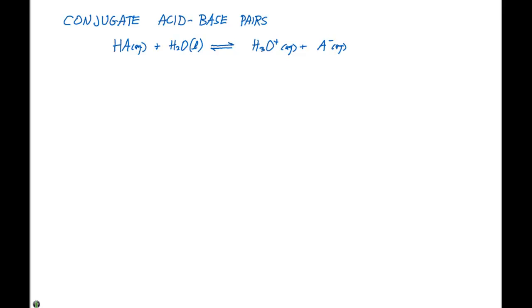In the last video, we described acid base equilibria. And now, when this equilibrium is established, we can identify something called conjugate acid base pairs.